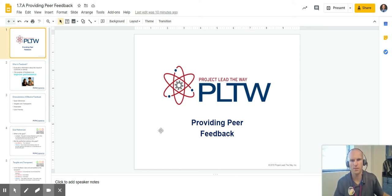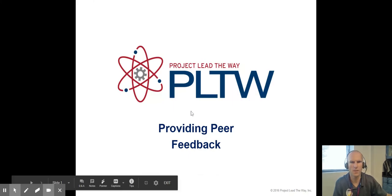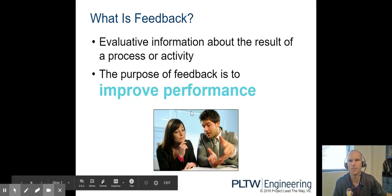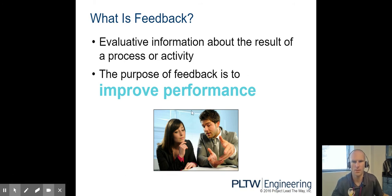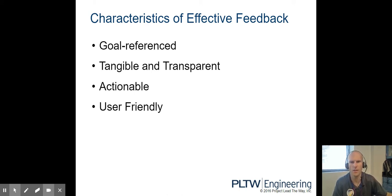This is lesson 1.7, providing peer feedback. So what is feedback? It happens when we evaluate information about the result of a process or activity. The purpose of feedback is to improve performance and should be goal referenced, tangible and transparent when you provide feedback, and actionable and user-friendly.